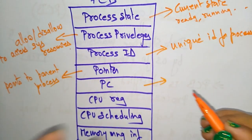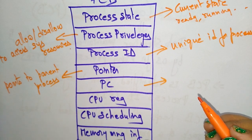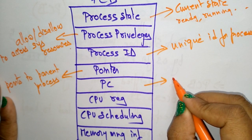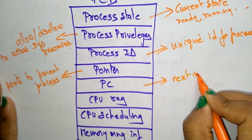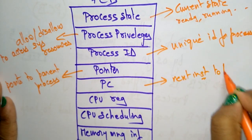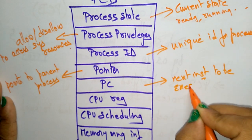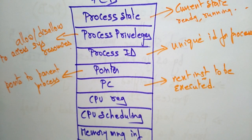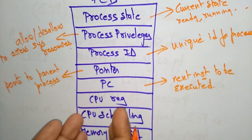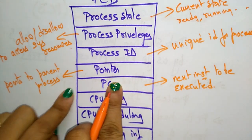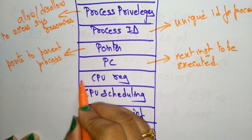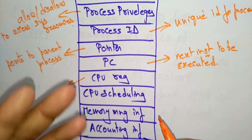The program counter points to the address of the next instruction to be executed in the process. If this process is over, the address of what instruction is next is stored in the program counter within the Process Control Block.